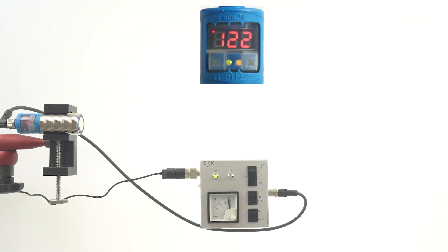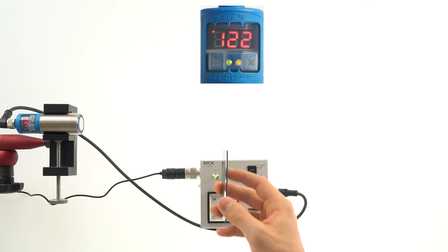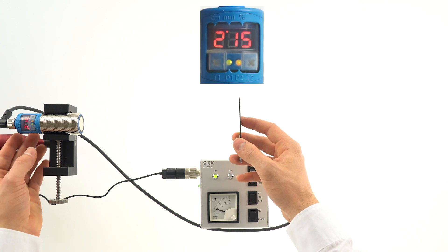For the scaling of the analog output, position any ultrasonic reflecting object, for example a business card, in front of the sensor at the desired near distance to teach the 4 milliamp value.